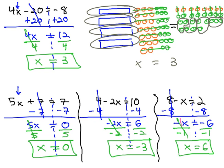We could check each of these answers by plugging in the number we found in for x. Four times three is twelve, minus twenty is negative eight, and you could do a similar check on all the other problems.